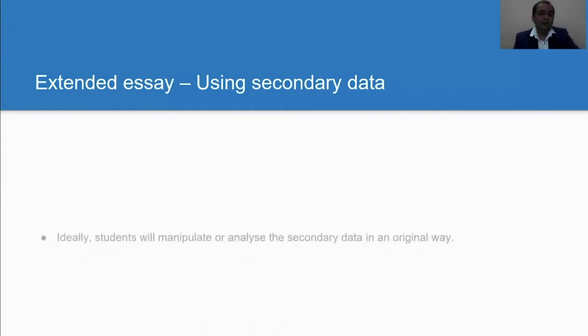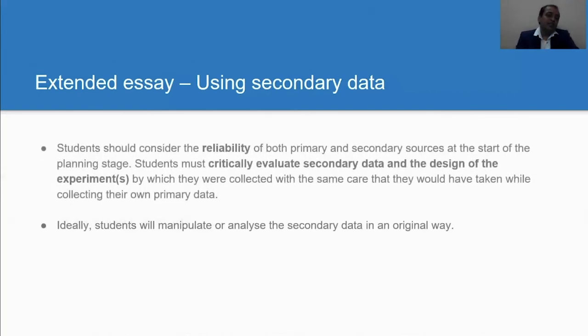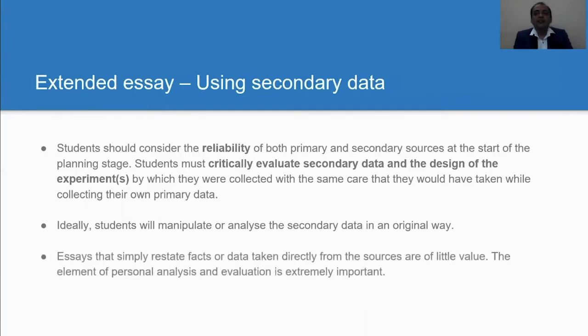If the student is using secondary data, then students should consider the reliability as they would for primary data. Students should critically evaluate the secondary data and the design of the experiment through which that secondary data is collected, because students will manipulate or analyze the secondary data in an original way. If it is simply a restatement of the facts or the data collected, then it is not having much importance.